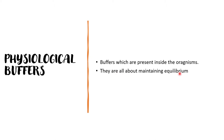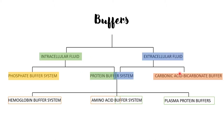They help in maintaining equilibrium in our system. Buffers help in maintaining the pH and are present both in intracellular fluid and extracellular fluid. In intracellular fluid the phosphate buffer system is the most prominent one, while in extracellular fluid the carbonic acid bicarbonate buffer is the prominent one. In between comes the protein buffer system which helps in maintaining both intracellular and extracellular pH.